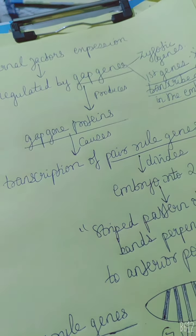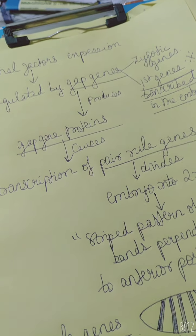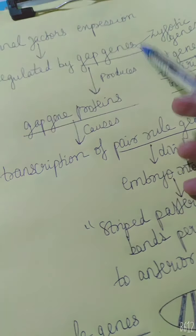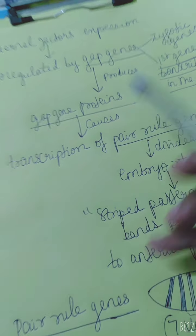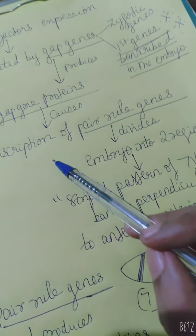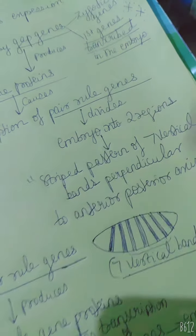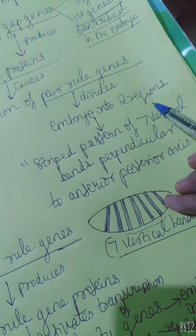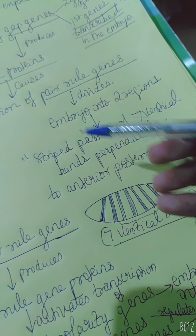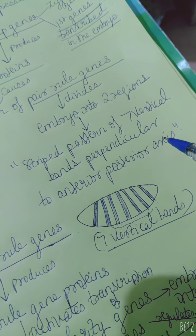Genes by transcription and translation will produce proteins. GAP genes produce proteins known as GAP gene proteins, which in turn cause the transcription of another set of genes known as pair-rule genes. These pair-rule genes divide a particular embryo into two regions, and as a result you can observe a striped pattern of seven vertical bands perpendicular to the anterior-posterior axis.